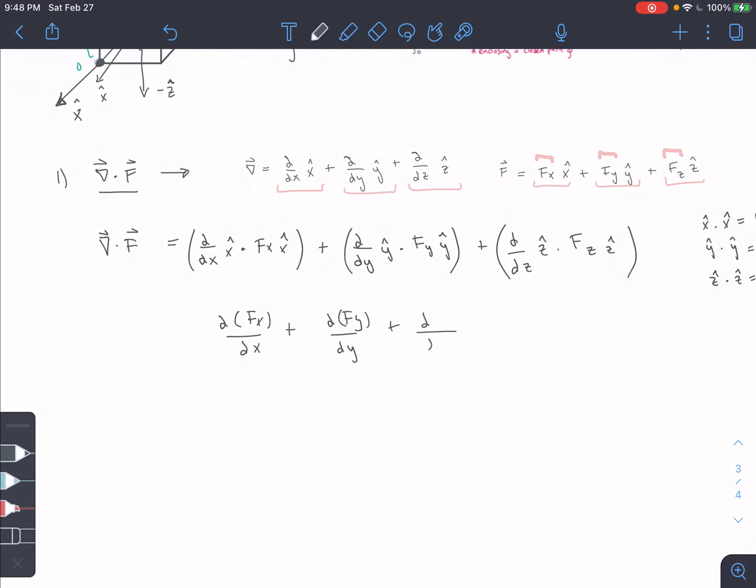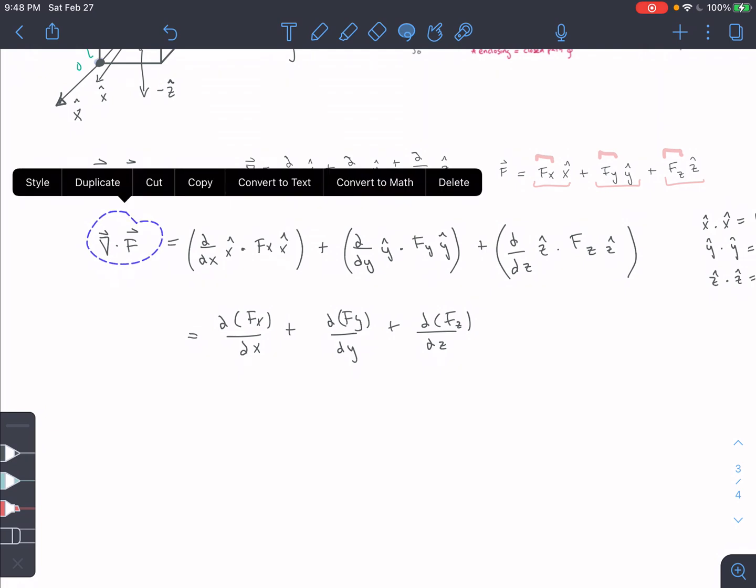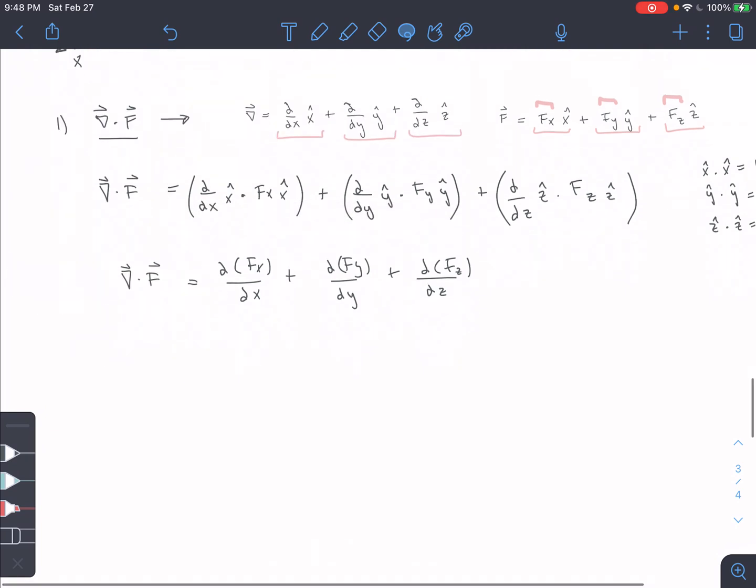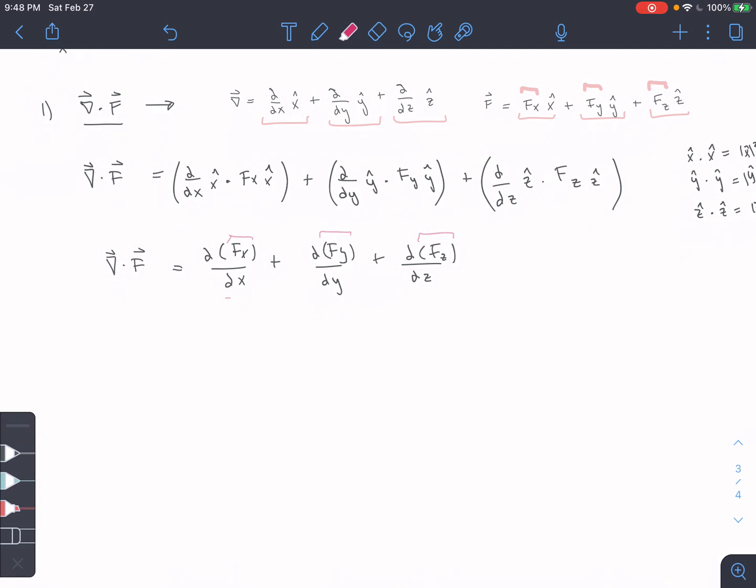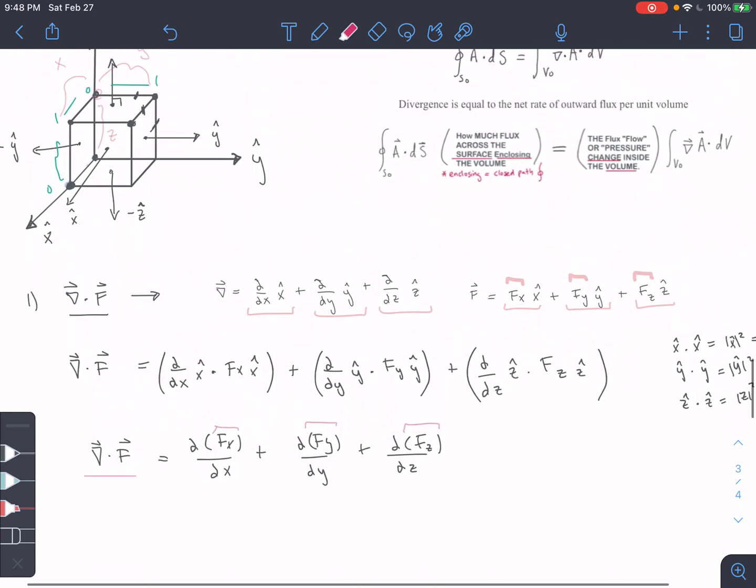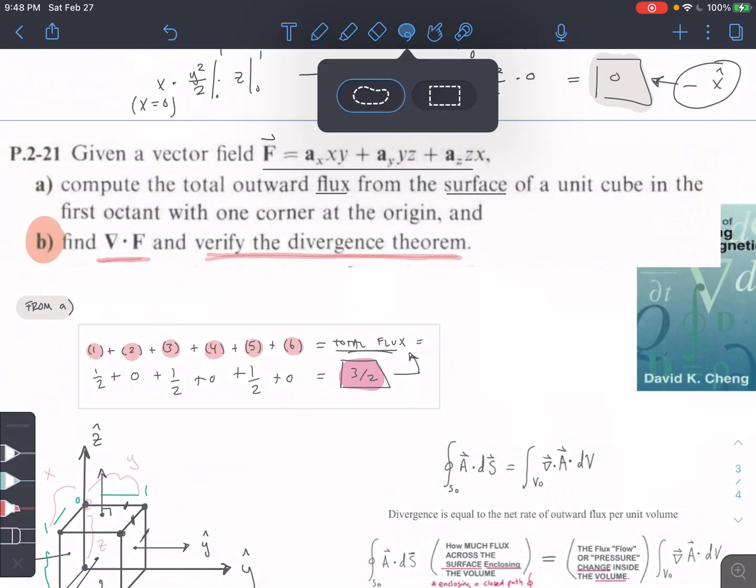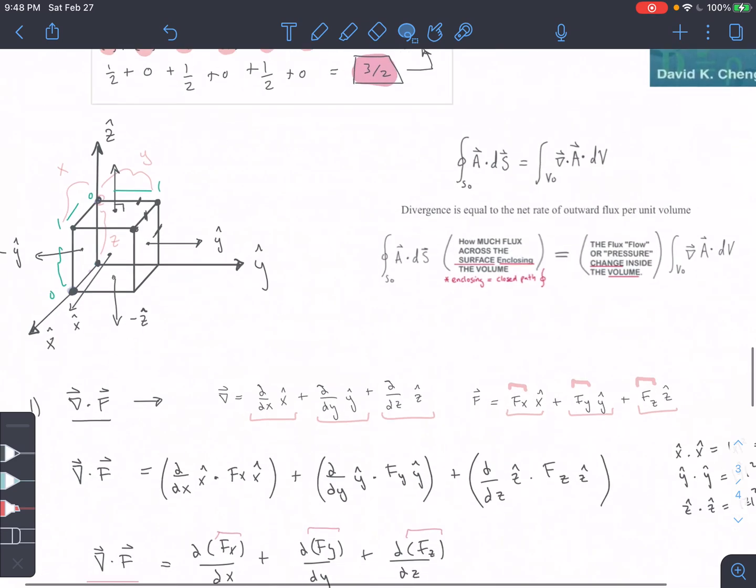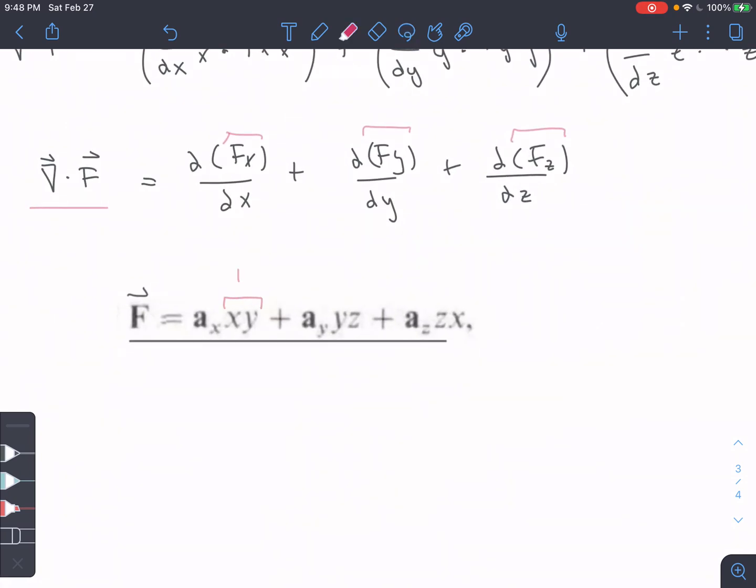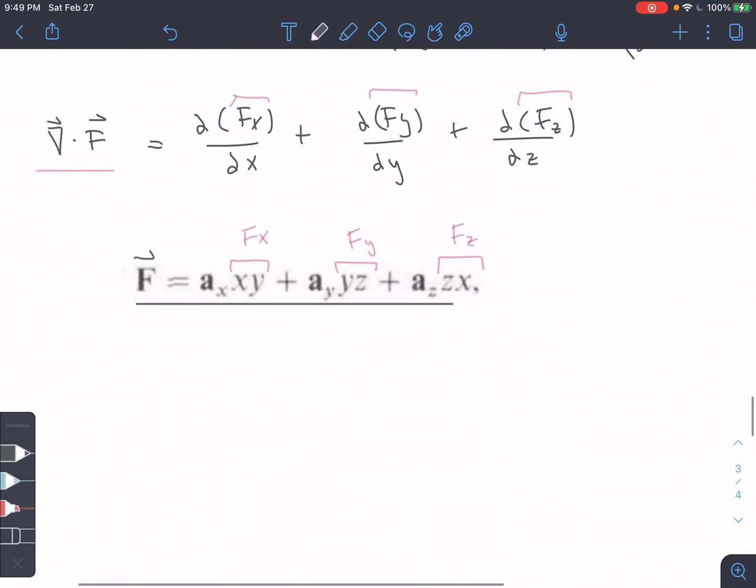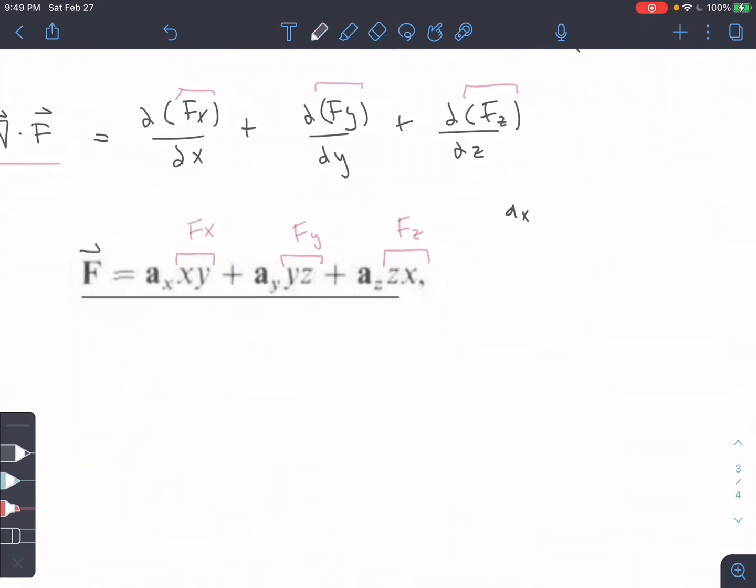So this is our general equation for our del operator dot f. So we can actually plug in—we can take any vector and plug in the magnitude in the x, y, and z direction, and then apply these partial derivatives, and it will give us the value for this. So that's what we're going to do here. We're going to take—we're going to use the general equation that we just derived, and then we're going to take our vector, and we're going to sub in the values. So this is our f of x, this is our f sub y here, this is our f sub z. So just a quick note on notation here, because some people tend to get hung up on this.